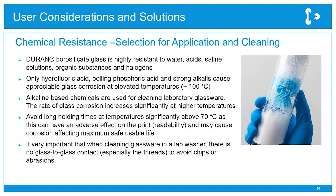Borosilicate glass is a very good choice because it's highly resistant to most chemicals you're likely to use, including virtually all organic substances. Only very hazardous substances at high temperatures — for example, hydrochloric acid — will degrade the glass. Some care is needed with alkaline-based cleaning at high temperatures, which can cause corrosion. It's best to avoid cleaning above 70 degrees and to keep the cycle as short as possible. With glass washers, prevent glass-to-glass contact, as this can damage the glassware.